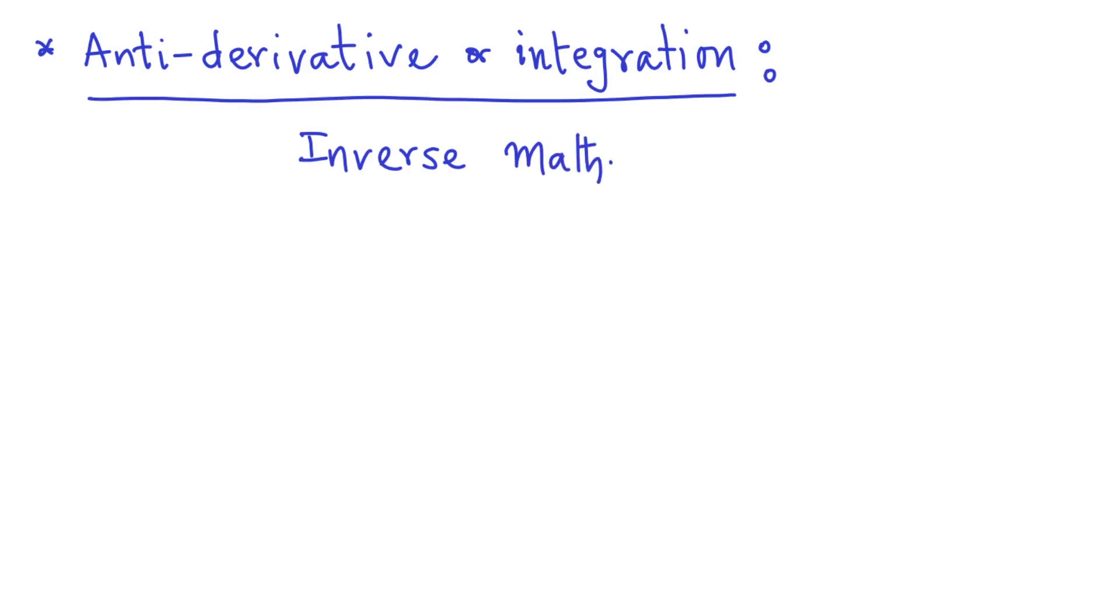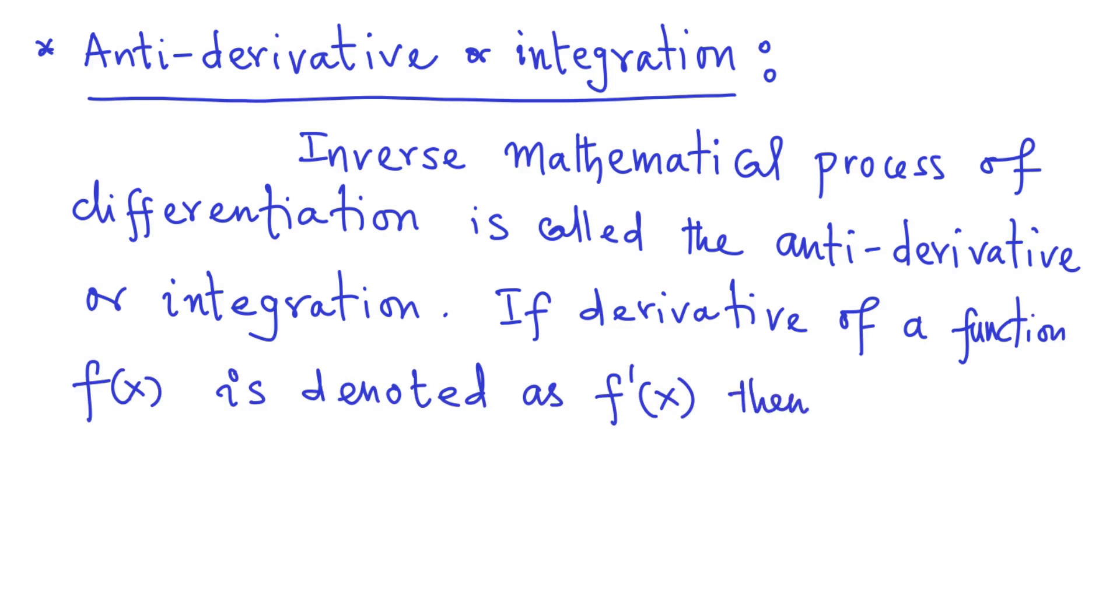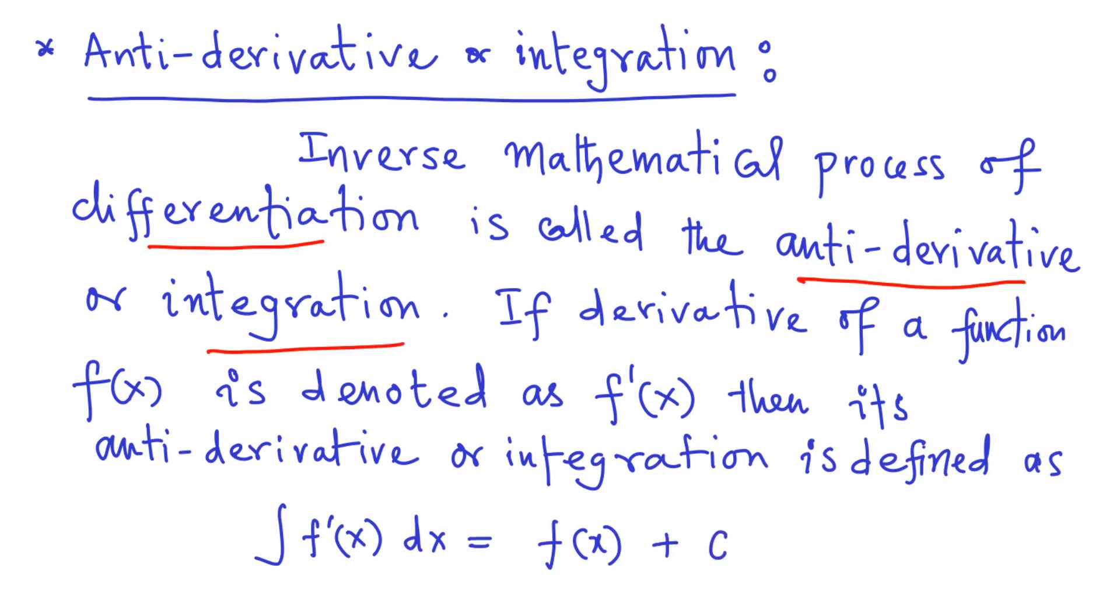The inverse mathematical process of differentiation is called the antiderivative or integration. If derivative of a function f(x) is denoted as f prime of x, then its antiderivative or integration is defined as you see it here, where c is a constant of integration.